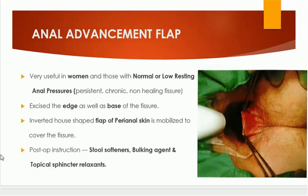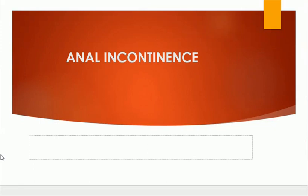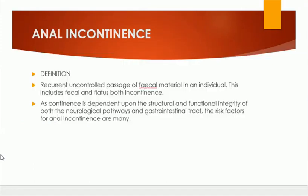The second part of the lecture is about anal incontinence. By definition, anal incontinence is the recurrent uncontrolled passage of fecal material in an individual. This includes fecal matter as well as flatus. So the incontinence is both for feces and flatus.